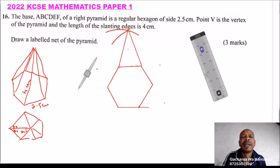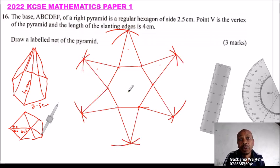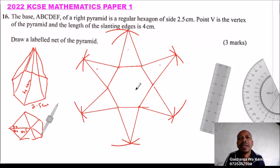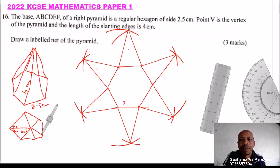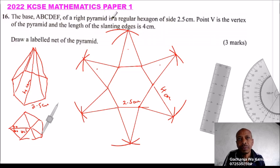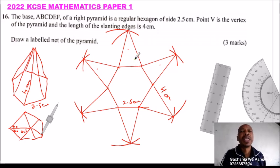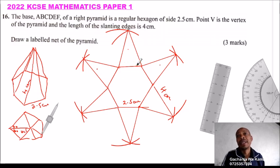We continue like that and end up with the complete net of the pyramid. The base side is 2.5 cm and the slanting edges are 4 cm. That's the net of the solid — the pyramid given in the question. This is a guideline on how you go about it using your geometrical instruments. You should get a good net. That's how you do it.